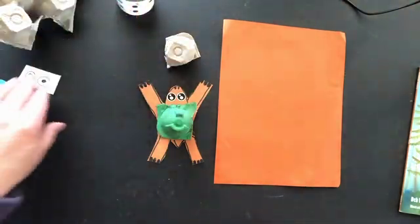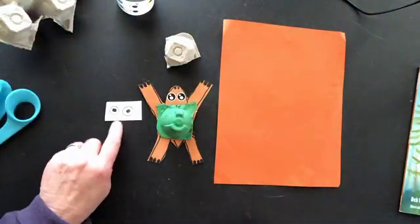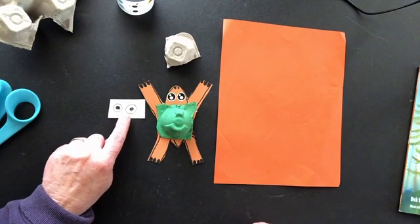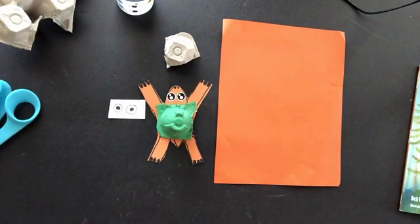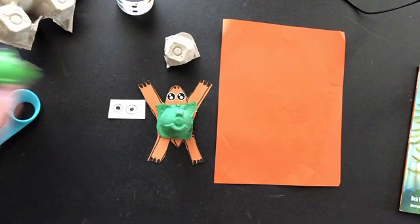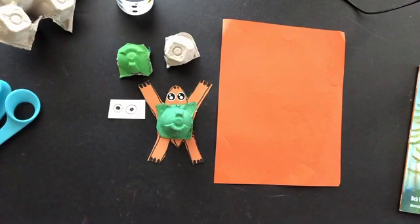We're going to be using eye stickers or googly eyes. If you don't have either one of those, we're going to be using a white piece of paper, drawing the eyes, and we can cut those out later. And then we're also going to be using watercolor paints, so any kind of paint that you have will actually work.